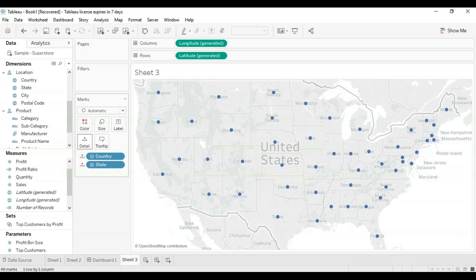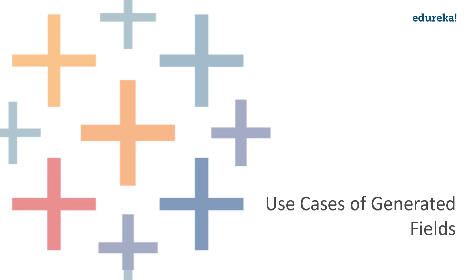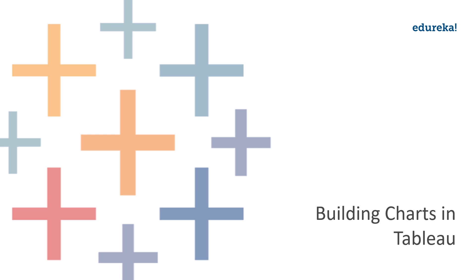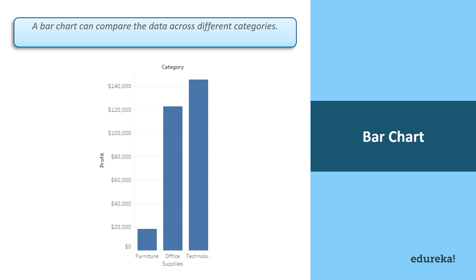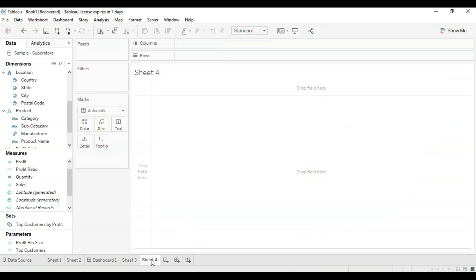That was all about generated fields. Let's move on to understanding how and when to build different types of visuals. Tableau is known to create interactive visuals for easy data interpretation, so you can create various types of graphs based on the purpose. The different charts that can be created using Tableau and their specific purposes is something I'm going to show in the next segment of this session. We're going to start with the bar chart.